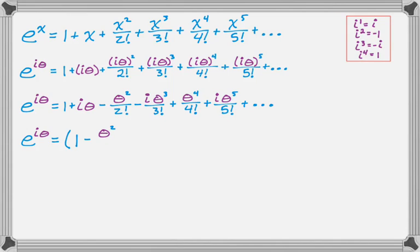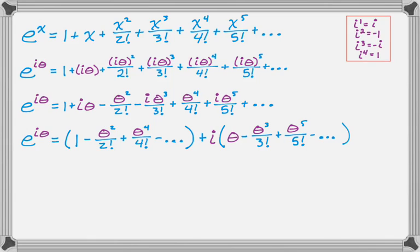So all the things that don't have i, in parentheses, that's 1 minus theta squared over 2 factorial plus theta to the 4th over 4 factorial plus dot dot dot. I'm going to factor i out and then write all the things that have an i up there. So i and then it's going to be theta minus theta cubed over 3 factorial plus theta to the 5th over 5 factorial. And that goes on forever. And if you look at it, so we have e to the i of theta equals.